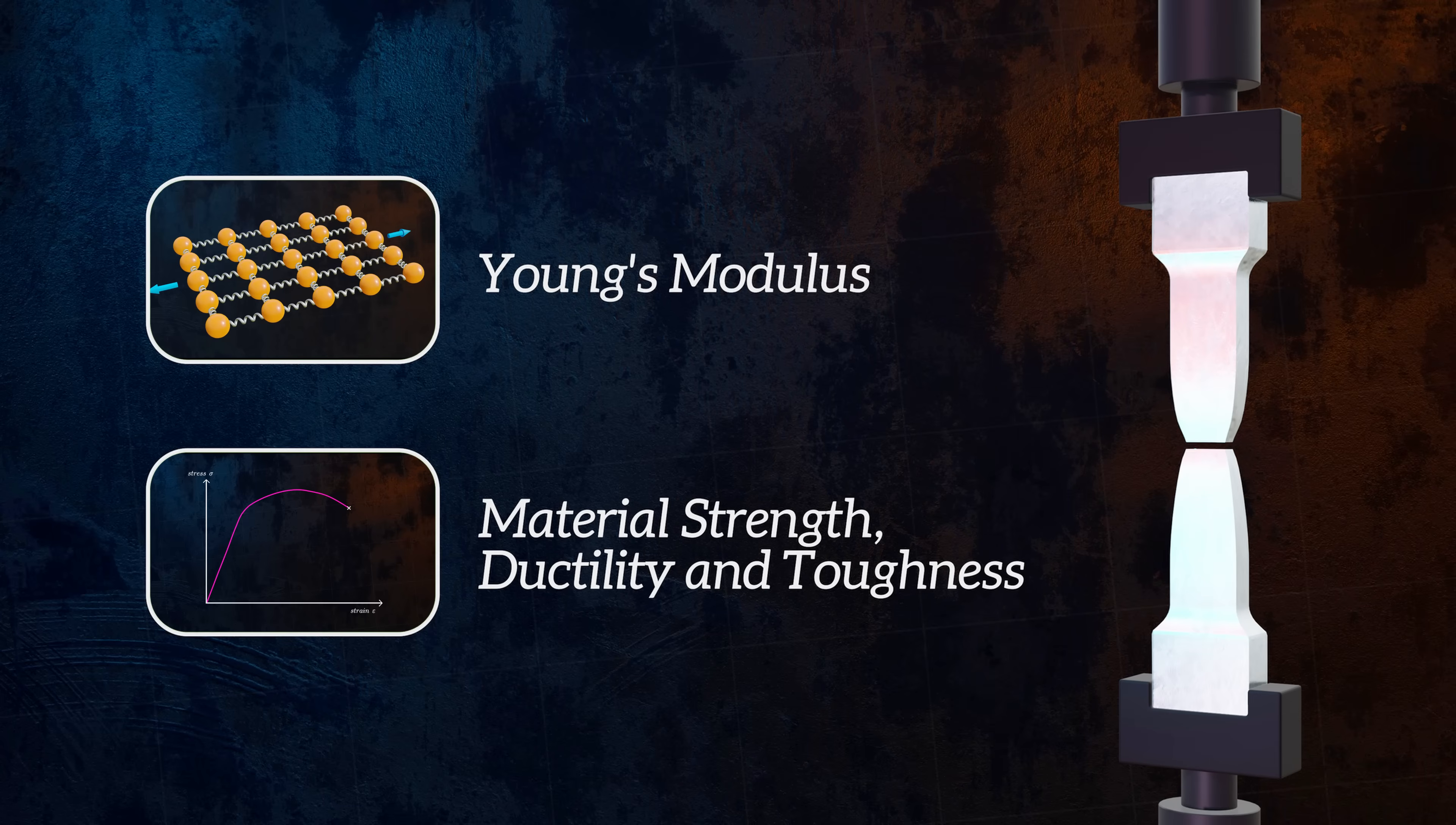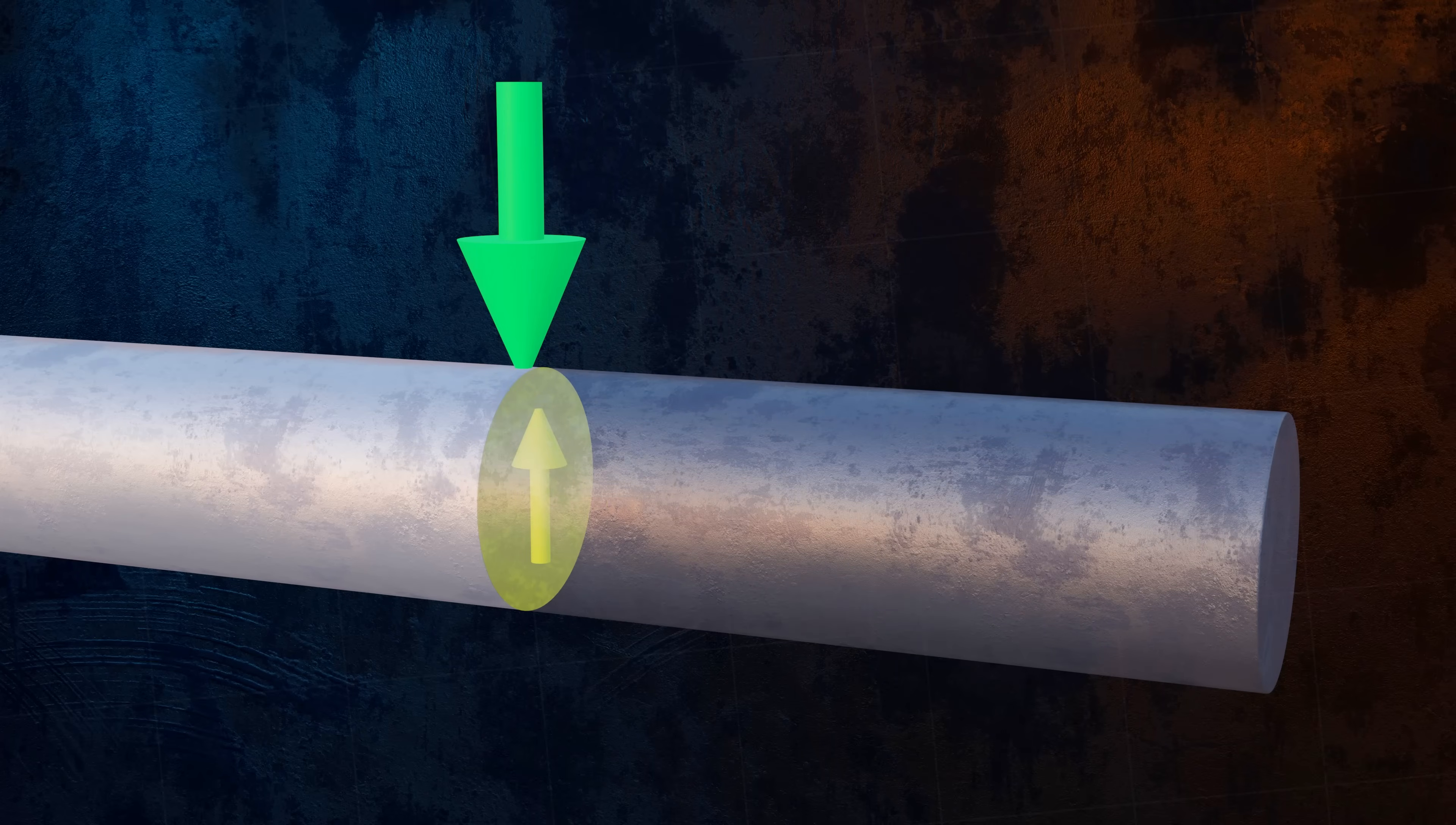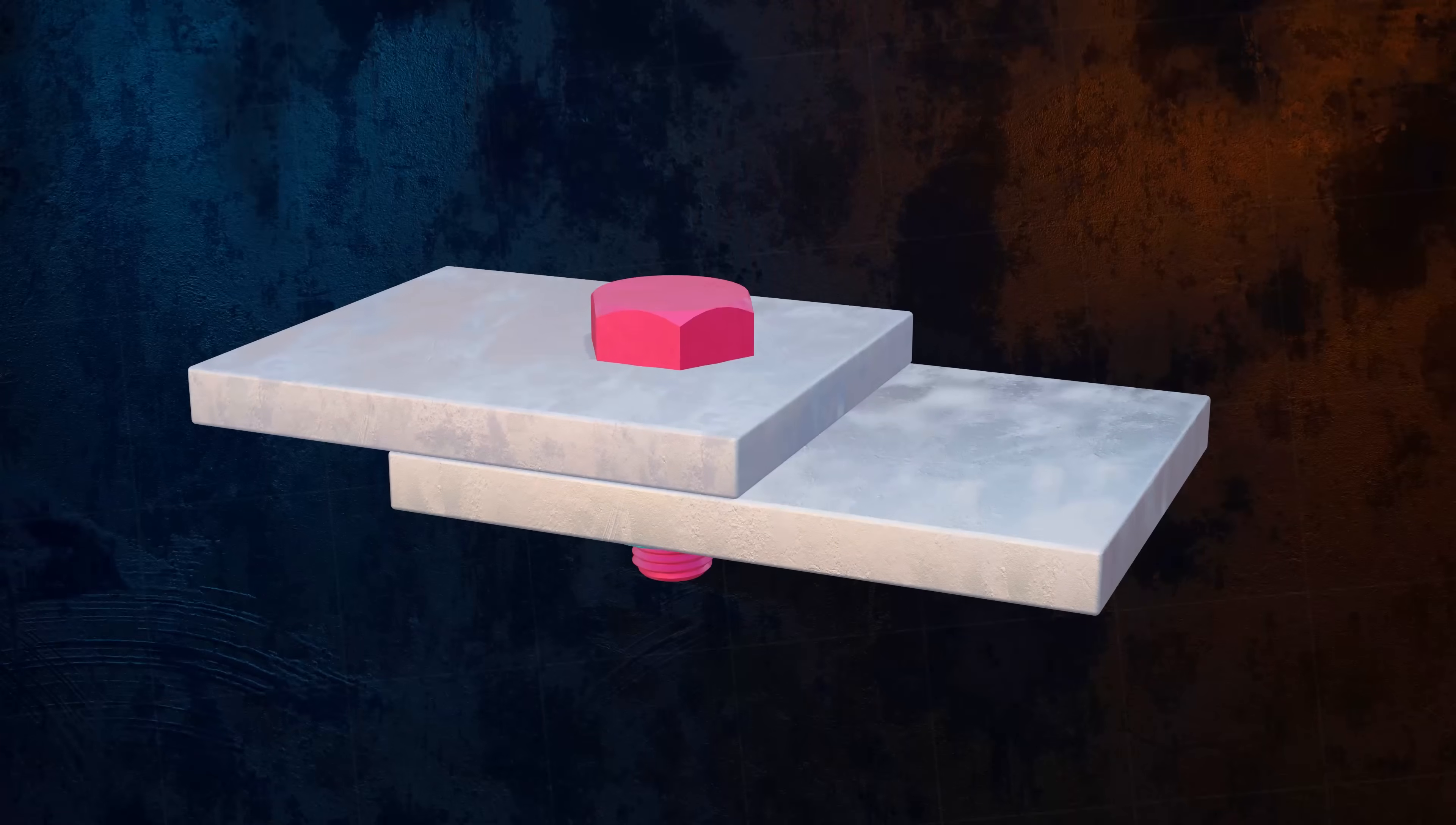So far we have only talked about normal stress, which is stress acting perpendicular to a surface. The other type of stress is shear stress. If our bar isn't loaded along its axis, but instead perpendicular to its axis, like this, the internal forces that develop within it are oriented parallel to the bar's cross-section. These internal forces are called shear forces. Shear loading is common in bolts, for example.